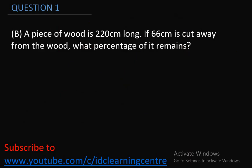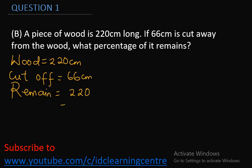Question 1B says, a piece of wood is 220 cm long. If 66 cm is cut away from the wood, what percentage of it remains? Bring out your numerical values. The wood itself is 220 cm long. Now, cut off or cut away, a part was removed, which is 66 cm. The part that is remaining will be 220 minus 66.